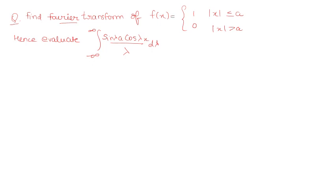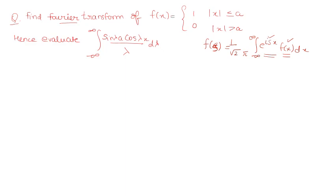First of all let me give you the formula for Fourier transform. There are two formulas which you need to be aware of. If you have a function F in terms of s, then it is 1 by root 2π, limit minus infinity to infinity, e raised to power iota·sx times f(x) dx. You apply the multiplication of f(x) with e raised to power iota·sx with 1 by root 2π, and the limit is minus infinity to infinity.